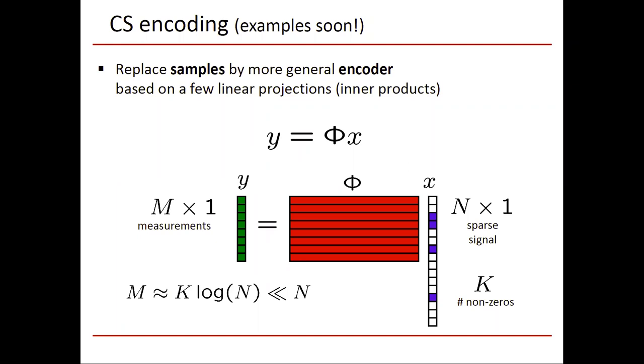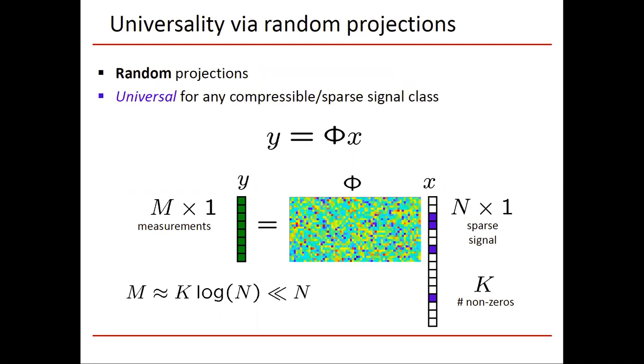Overall, once again, we have m measurements. M is proportional to k log n, which is much less than n. Another important thing to remember is this is not any matrix phi, but these are random projections with respect to a white noise matrix. That provides the property that with high probability, these measurements are going to be universal with respect to any compressible or sparse signal class.